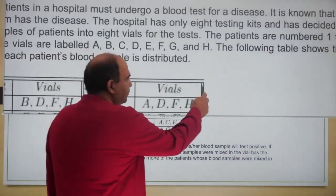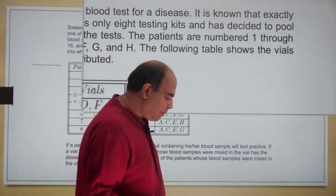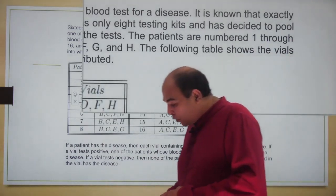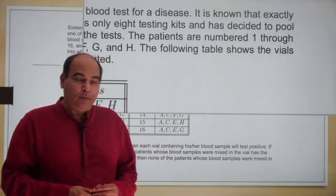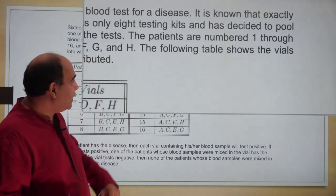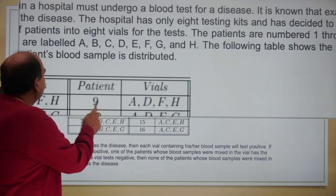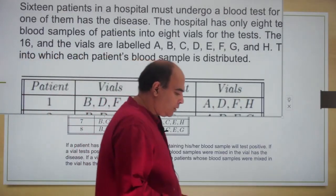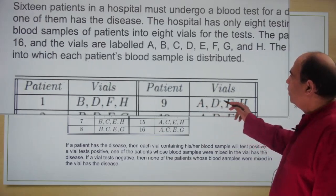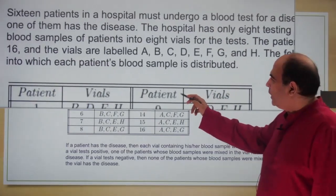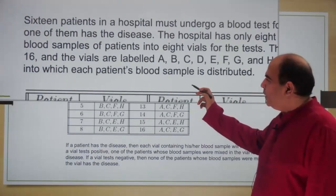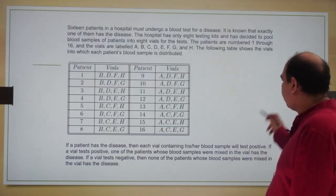The hospital has only eight testing kits — typical of COVID times — and has decided to pool blood samples of patients into eight vials for the tests. So 16 patients, pooling blood samples into eight vials. The patients are numbered 1 through 16 and the vials are numbered A through H. The following table shows the vials into which each patient's blood sample is distributed.